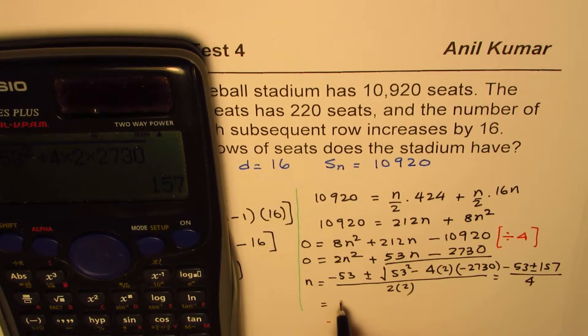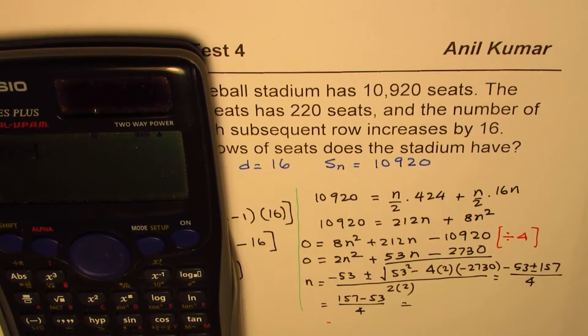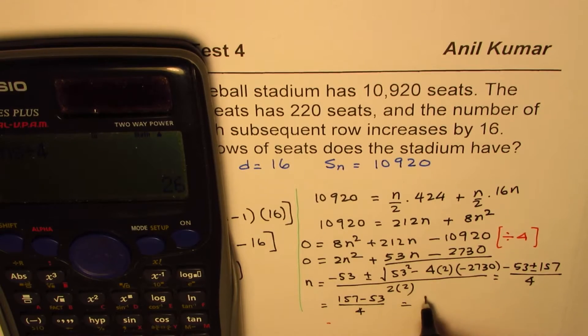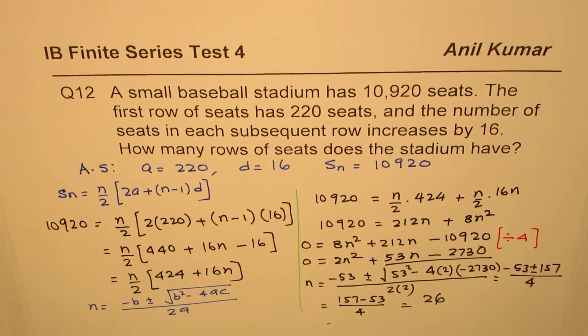That is, we'll do 157 minus 53 divided by 4. That's the valid answer. So 157 minus 53 divided by 4 equals to 26. So we get 26 as our answer for the given question.